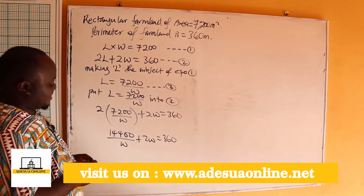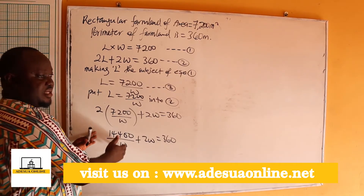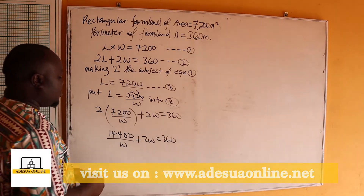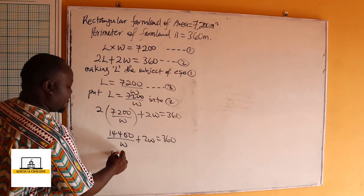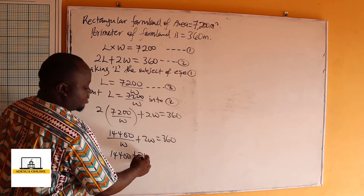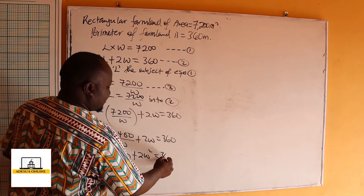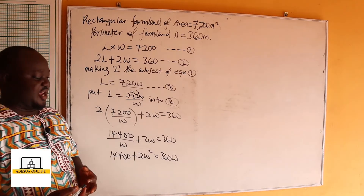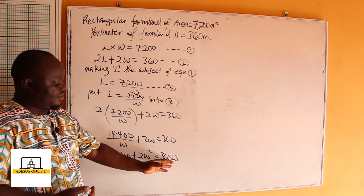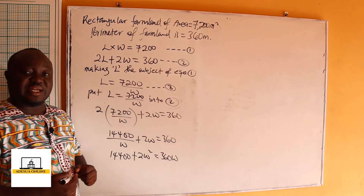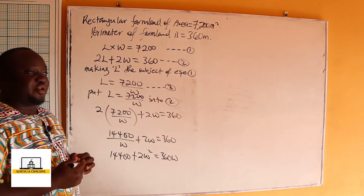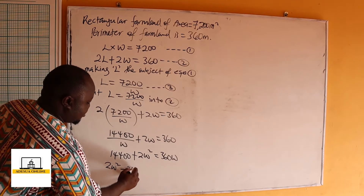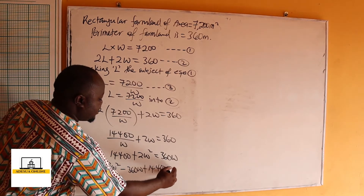Our LCM is W, so we multiply through all three terms by W. W cancels in the first term, leaving 14,400 plus 2W squared equals 360W. We recognize this as a quadratic equation, so we write it in standard form: 2W² minus 360W plus 14,400 equals 0.